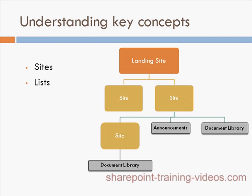Also, every site can have its own collection of lists. Think of lists as buckets that hold a specific type of information. So you can have an announcement list that would hold announcements, a documents list that would hold documents, and a links list that would hold links. There is no restriction to how many lists a site can have.